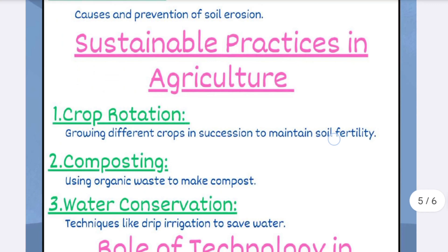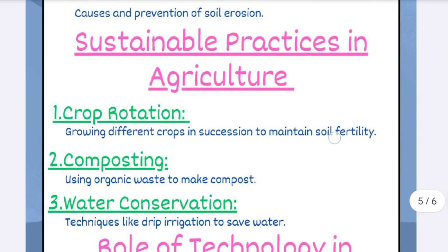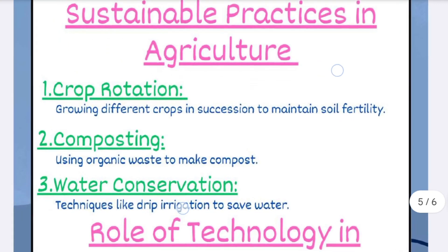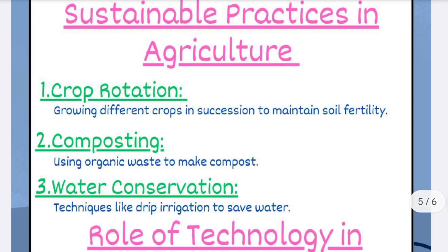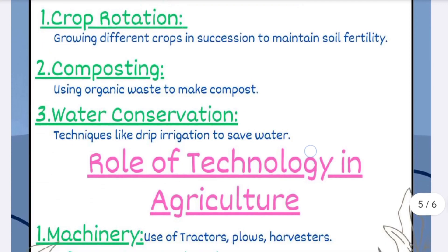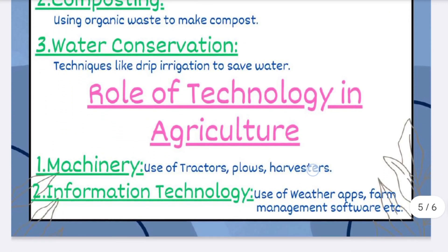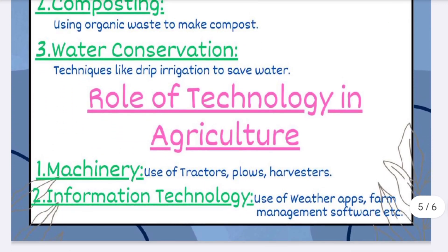Sustainable practices in agriculture: under it, number one, crop rotation; then composting; and the third one is water conservation.